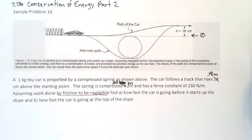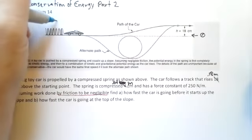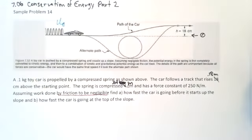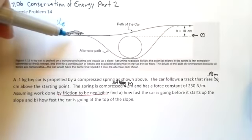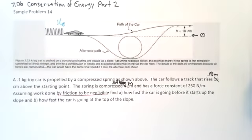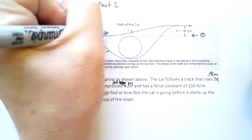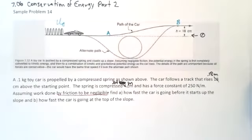So part A says, how fast is the car going before it starts up the slope? And B says, how fast the car is going at the top of the slope? So now I need to do my energy inventory. In both of these cases, I am starting here at the compressed spring. So I'm going to have elastic potential energy UE. My gravitational is going to be zero and I'm not moving. And I can ignore work. So then part A is talking about what's going on here. And part B is talking about what's going on here.